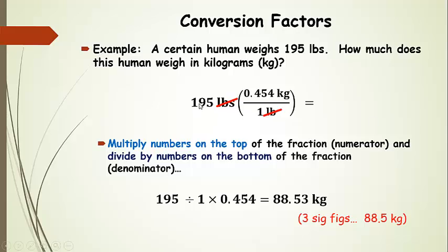Using the conversion factor we identified, we have 195 pounds — pounds cancel out — and we're left with kilograms. Multiply by any number on top, divide by any number on the bottom. So 195 times 0.454 divided by 1 gives us 88.53 kilograms. Now for sig figs: 195 pounds has 3 sig figs, so we round to 3 sig figs. The digit after is 3, which is less than 5, so we drop it and end up with 88.5 kilograms.